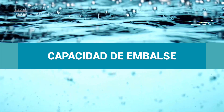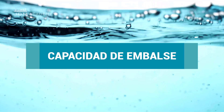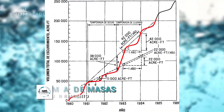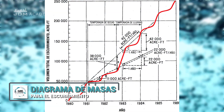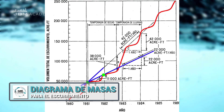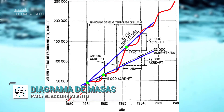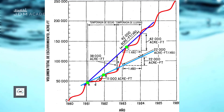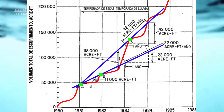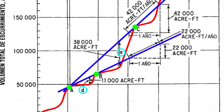The reservoir capacity for a given demand can be obtained by drawing a line with a slope equal to the demand tangent that touches the mass curve at the beginning of the selected dry period, as indicated by lines AB and AC on the mass diagram. The ordinates D and E represent the storage required to satisfy demands AB and AC.